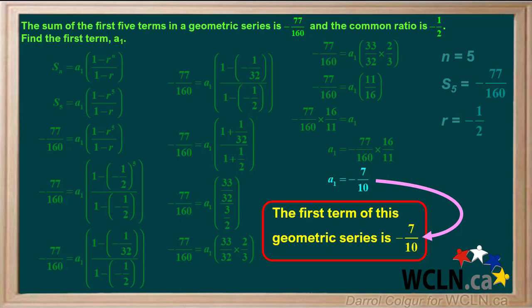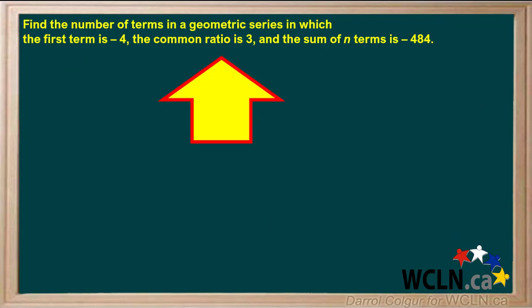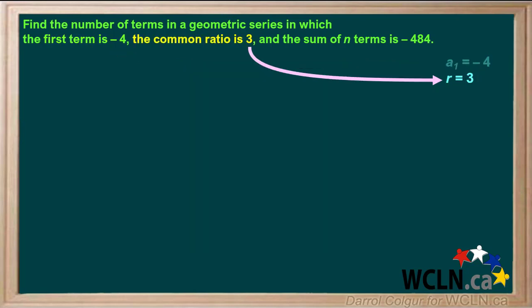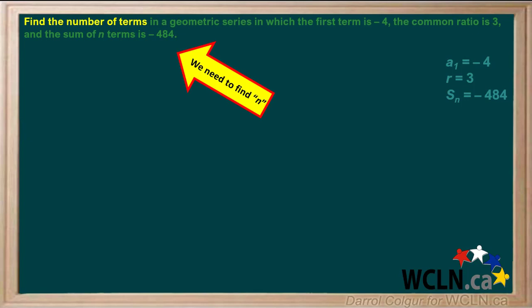Let's do another example. We're asked to find the number of terms in a geometric series in which the first term is negative 4, the common ratio is 3, and the sum of n terms is negative 484. We'll make a note that a1 equals negative 4, r equals 3, and Sn equals negative 484. We're asked for the number of terms, which is n.